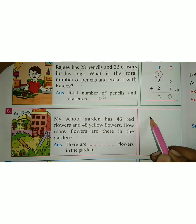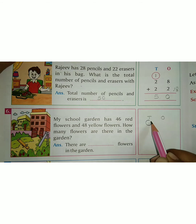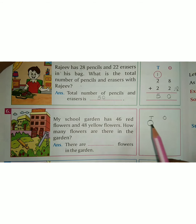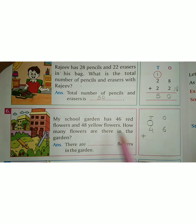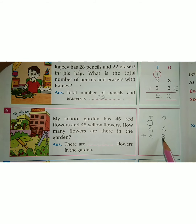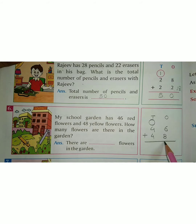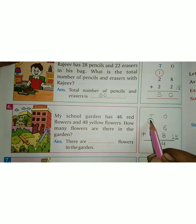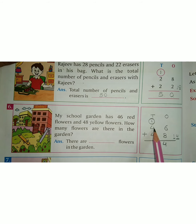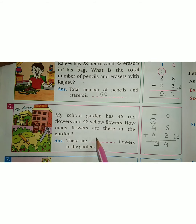46 red, so we put tens and ones. This is carry over space. 46 plus 48 yellow, that is 48. So 8 plus 6 is 14. So 4 we put here and this one is carry over. Now 1 plus 4 is 5, and 5 plus 4 is 9. So 94. There are 94 flowers in the garden.